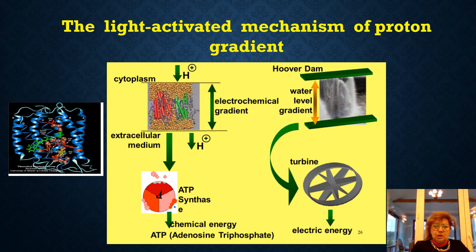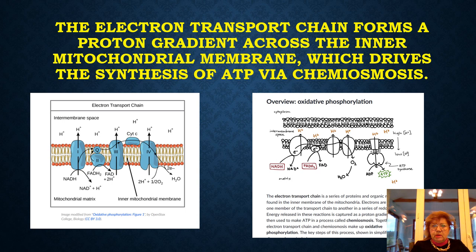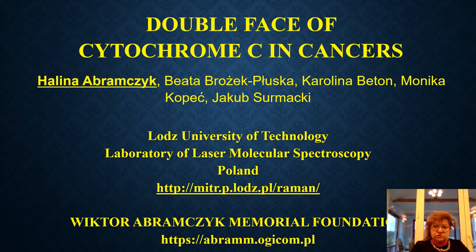As we know, the light-activated mechanism of proton gradient occurs in bacterial rhodopsin, for example — this is the first mechanism of producing the proton gradient. The second mechanism is due to the electron transport chain, which forms the proton gradient across the inner mitochondrial membrane, driving the synthesis of ATP via chemiosmosis. Here we have the cytochrome, which plays the key role in transfer of electrons between complex III and complex IV.